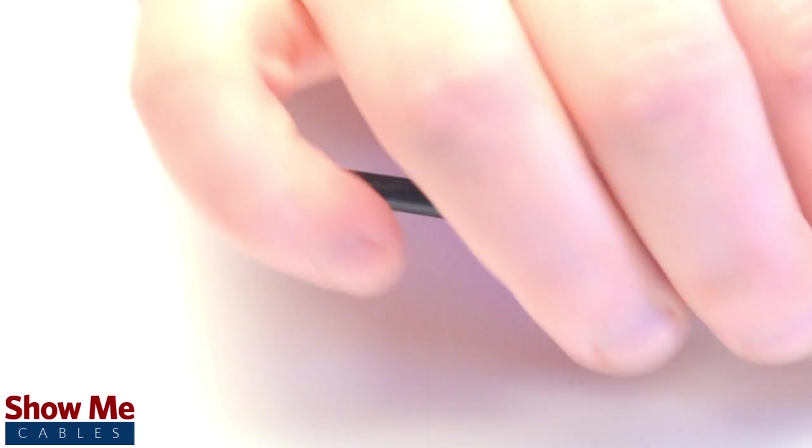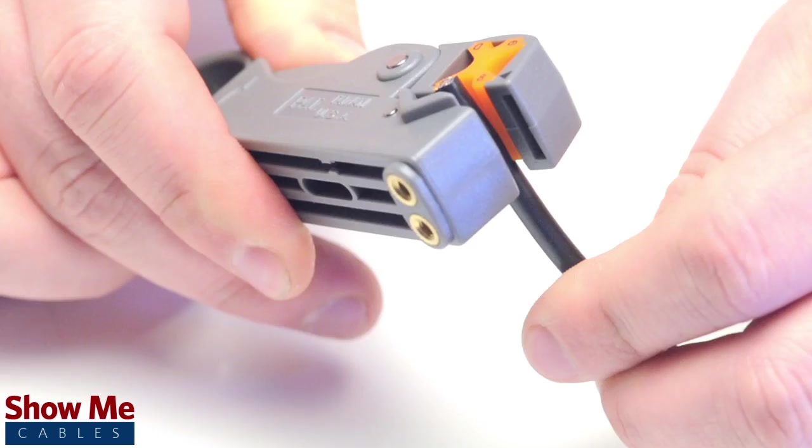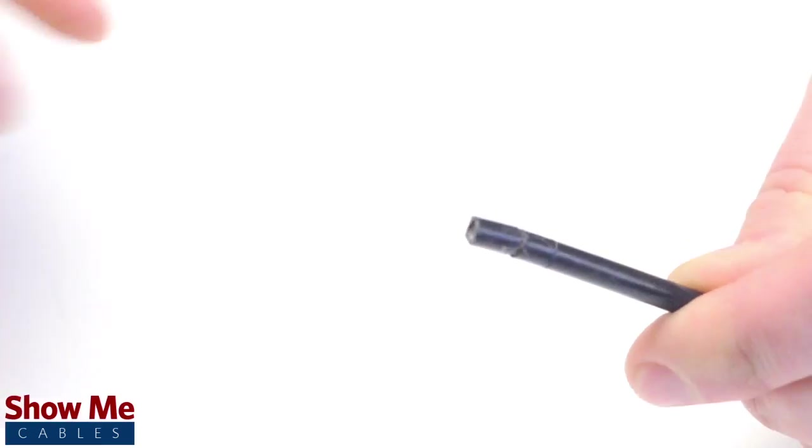Start by inserting the ferrule over the outer jacket of the cable. Then, using your cable stripper, strip back the outer jacket and dielectric.